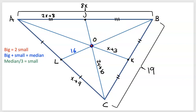So remember the rules on medians: when they meet at this centroid, the bigger part of the median equals two smalls, big plus small equals the median, and then if you have a total median you divide it by three and set it equal to the small. Using all of these rules we can probably figure out basically all of the lengths here.